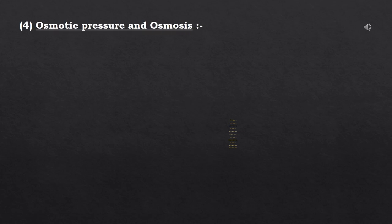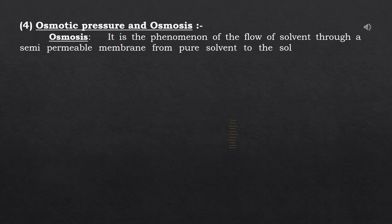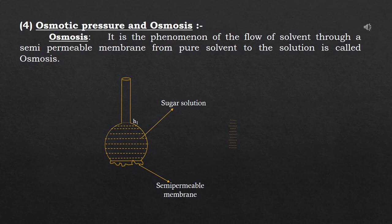Our fourth and last colligative property is osmotic pressure, which is related to the term osmosis. Osmosis is the phenomenon of flow of solvent through a semi-permeable membrane from pure solvent to the solution side. To understand this, consider an aqueous solution of sugar placed in an inverted thistle funnel with a semi-permeable membrane attached to its bottom, which is lowered into a beaker containing water.